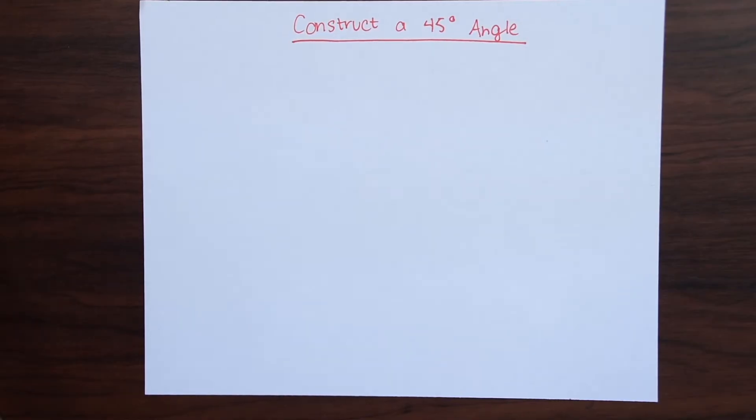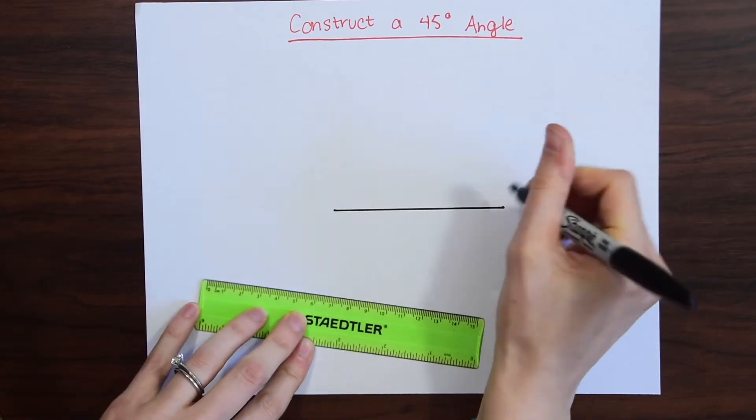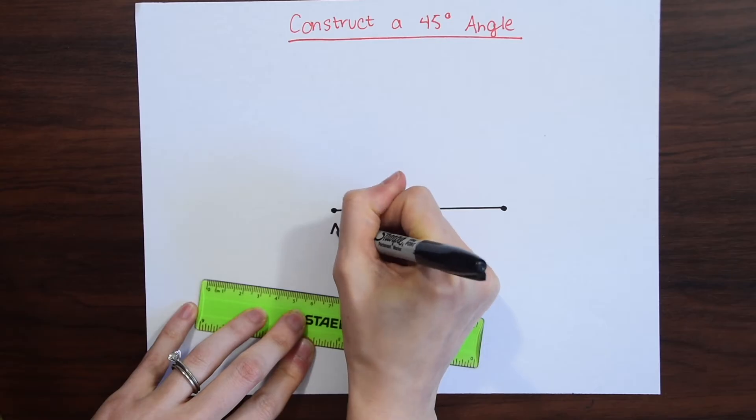The first thing we're going to do is draw this from scratch. Take a straight edge and just draw a line. I'm going to label this line AB.